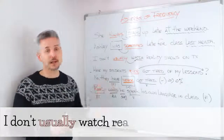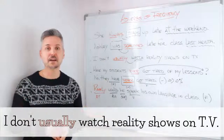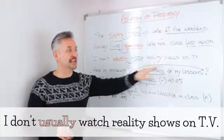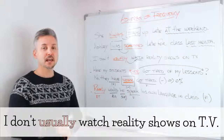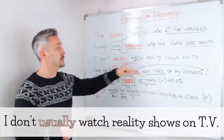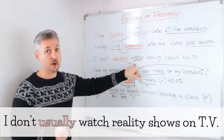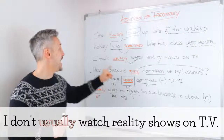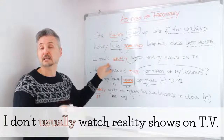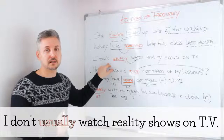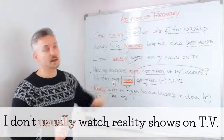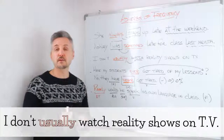Now let's look at the third example with a negative sentence: "I don't usually watch reality shows on TV." The adverb of frequency is always placed before the main verb "watch," even in a negative sentence — "I don't" is negative in the present simple. So "usually" is placed just before the main verb.